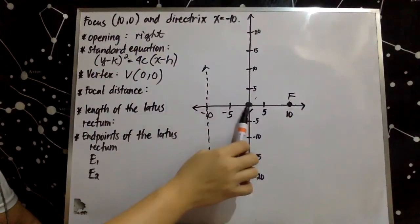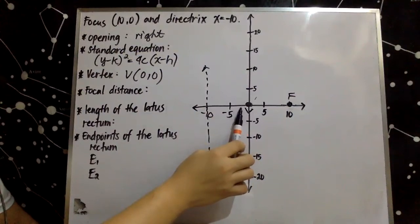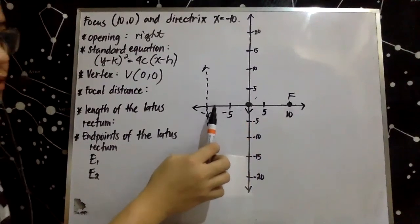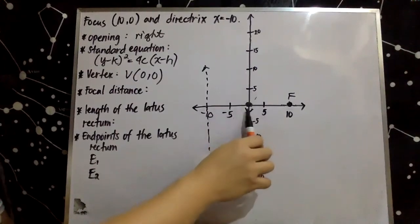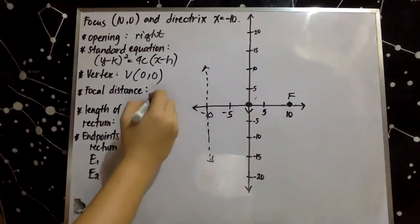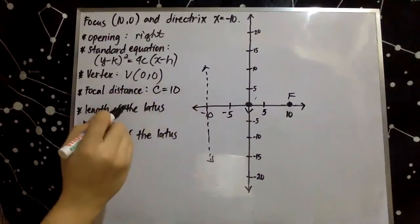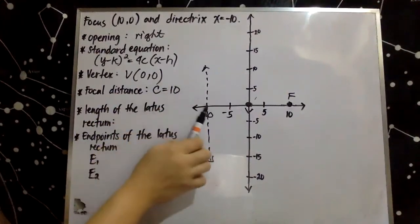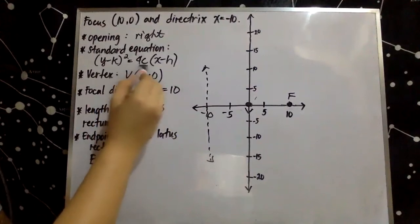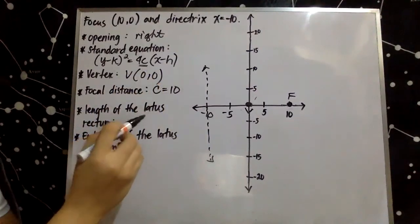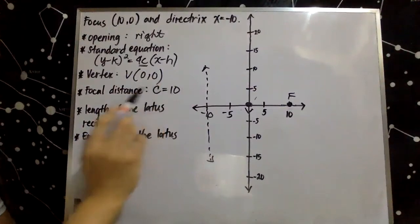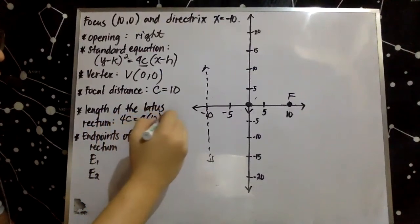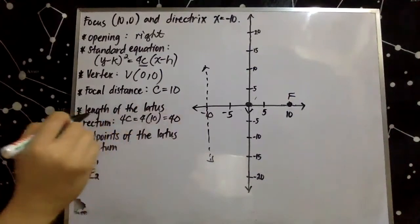We can determine the focal distance — the distance from vertex to focus or vertex to directrix — and we notate that parameter as c. The distance from vertex to focus is 10 units, so c is equal to 10. This is also the distance from vertex to the directrix. Based on our equation, 4c serves as the length of the latus rectum. Since c equals 10, we substitute to get 4 times 10, so the length of the latus rectum is 40 units.